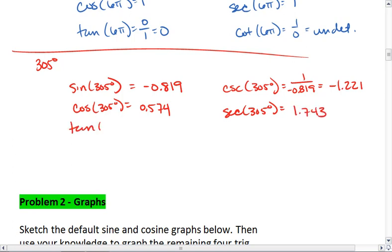Tangent of 305, again, just use your calculator, is negative 1.428. And the reciprocal of that, which is cotangent, ends up being negative 0.7.